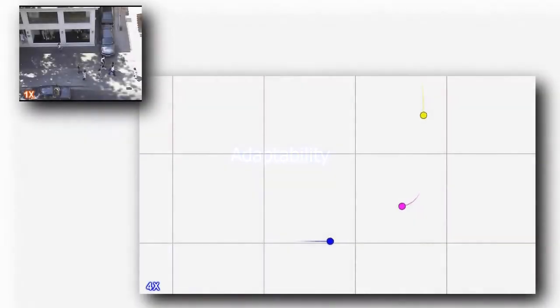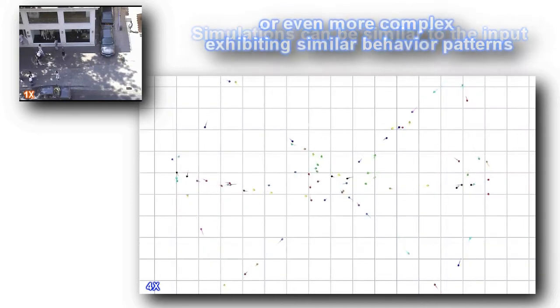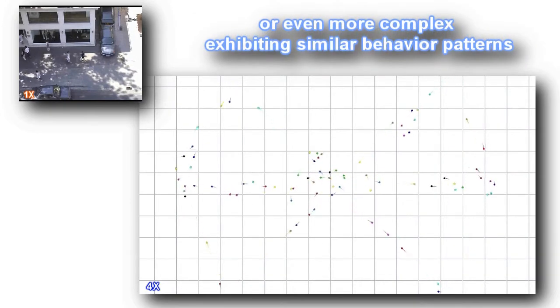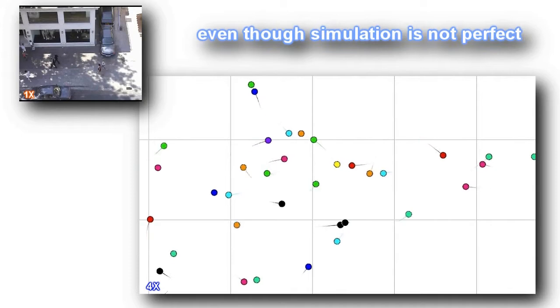Our system can simulate crowd behavior in environments similar to the input, but also more complex ones. Here we show an extreme example where input from a sparse crowd is used for a much more dense and complex situation. Agents try to adopt keeping similar behavior to the input, but due to the large differences there are some collisions between agents.